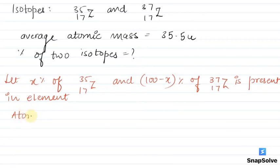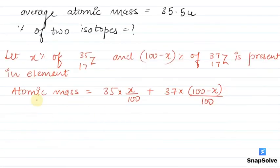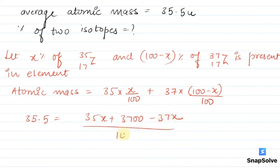Atomic mass equals 35 times x divided by 100 plus 37 times 100 minus x divided by 100. Simplifying, the atomic mass given is 35.5 equals 35x plus 3700 minus 37x all divided by 100.